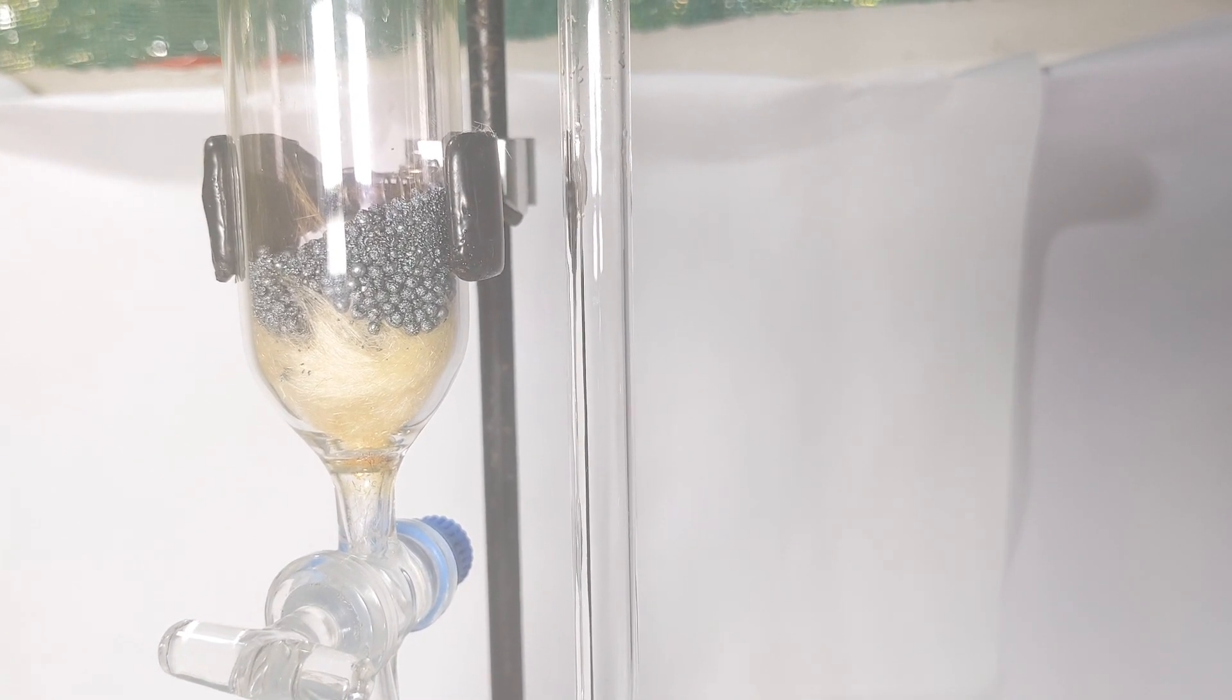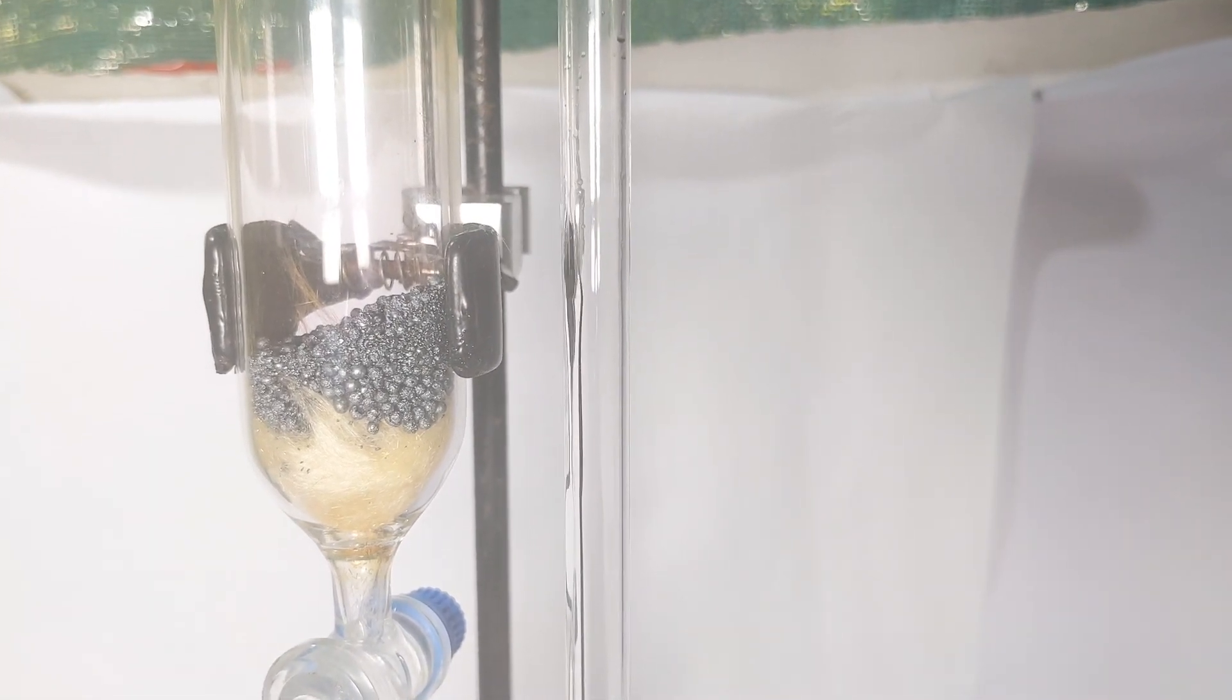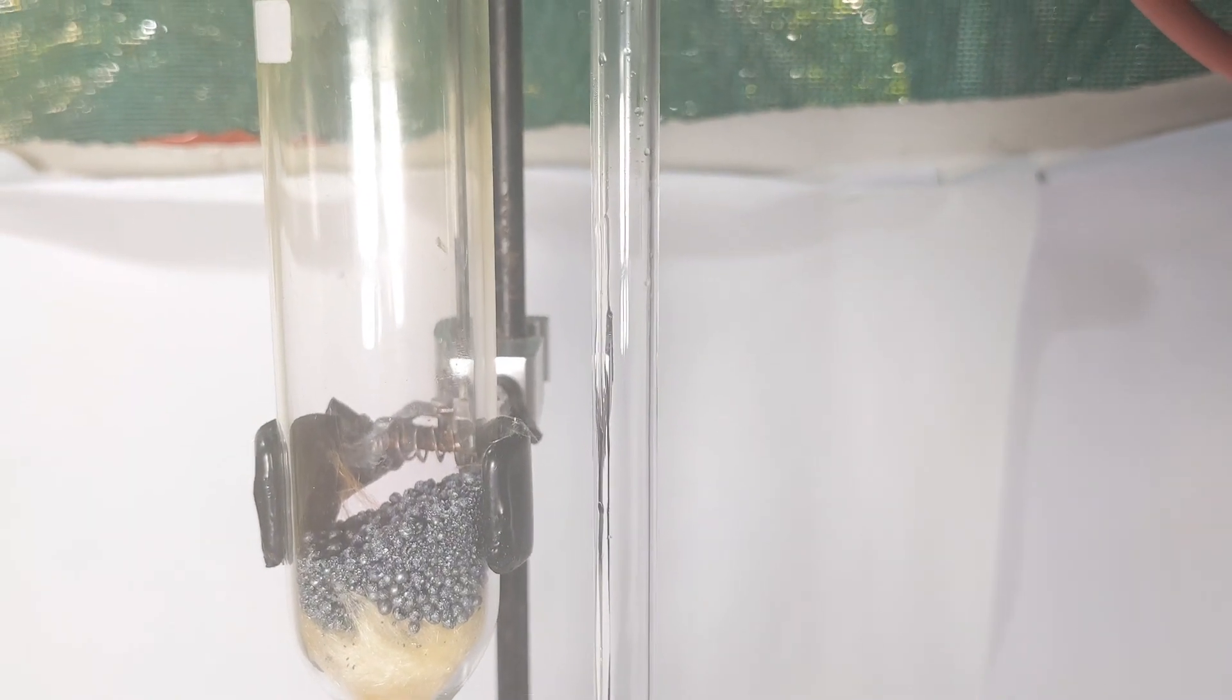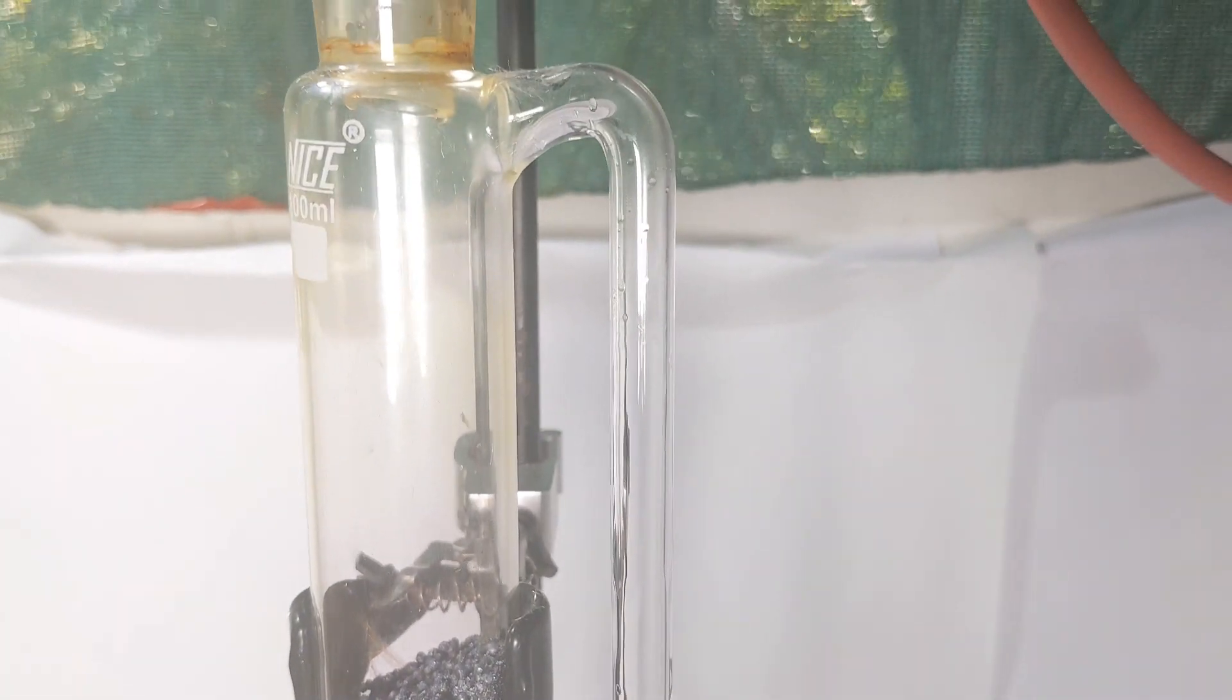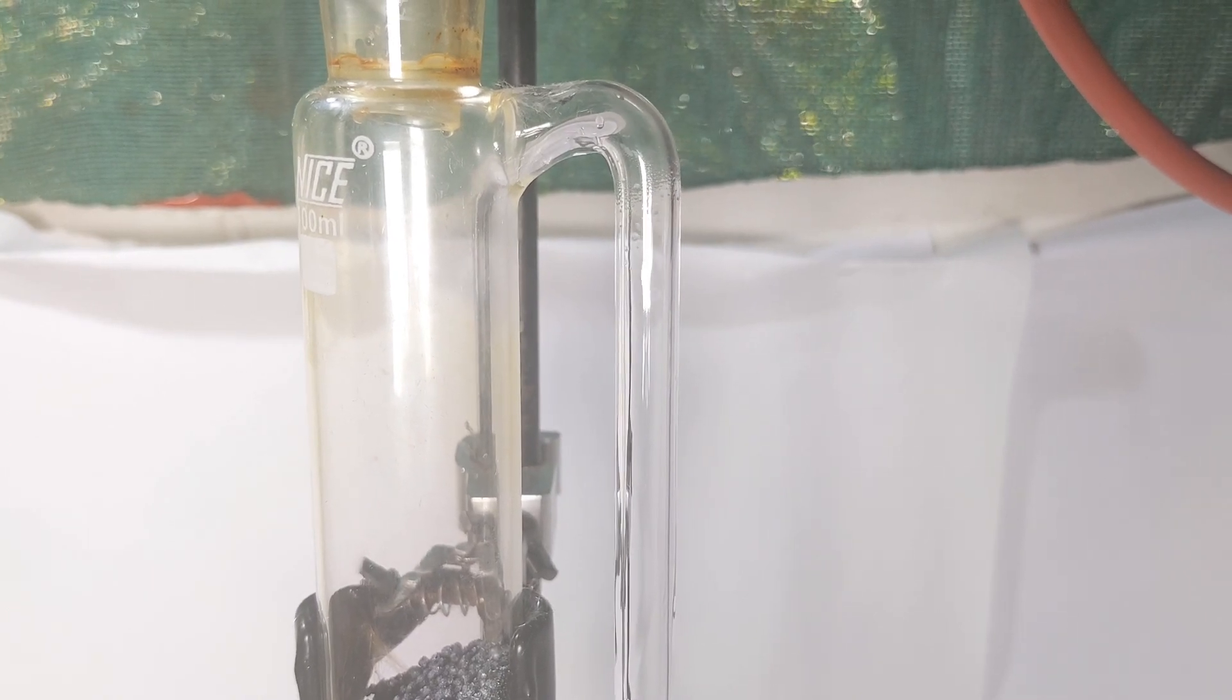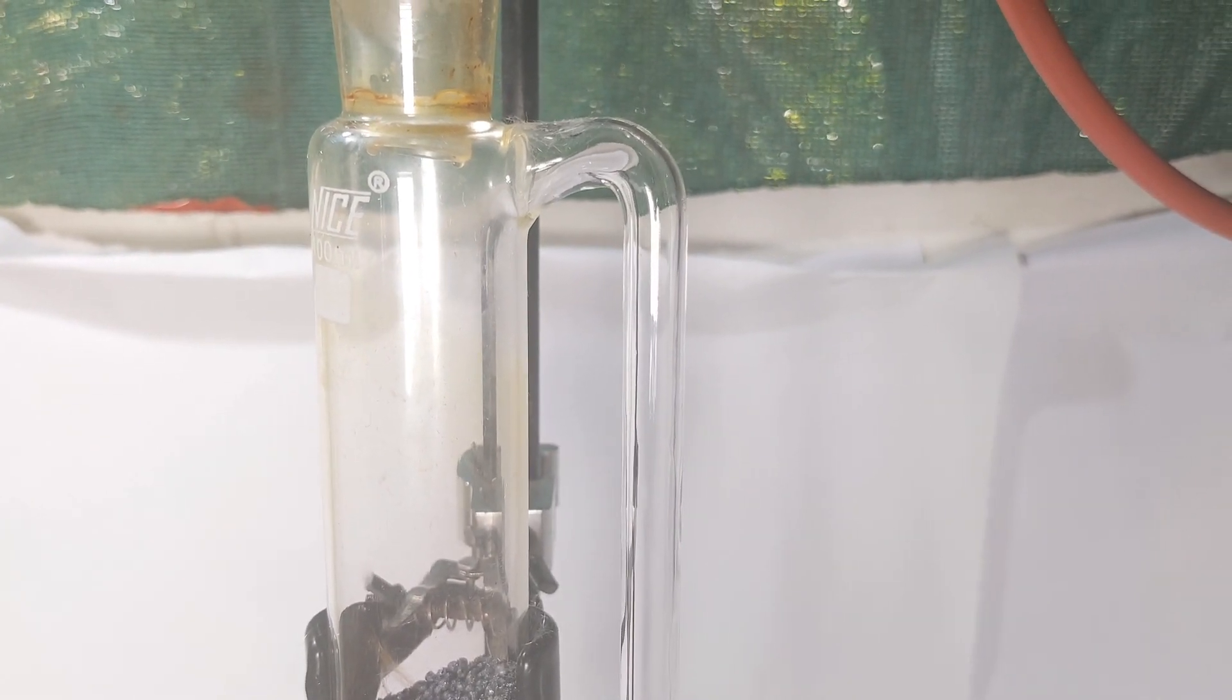It does not go further up because of the condenser column placed on top of the funnel which has cold water running through it. Instead it goes down into the funnel, condenses to liquid and dissolves the iodine.